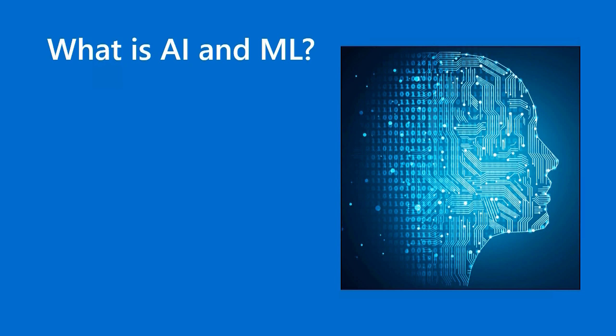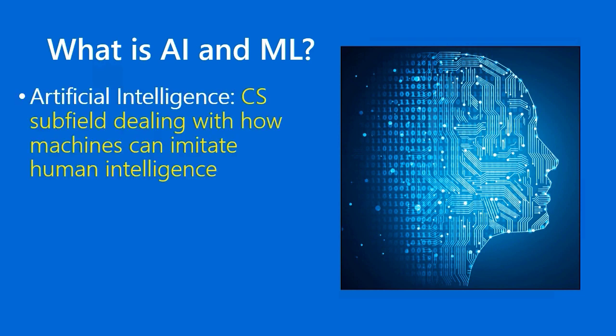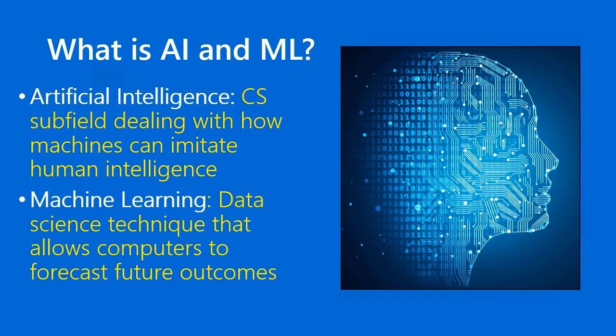I want to make sure you understand what is meant by artificial intelligence and its related term machine learning. These terms are often abbreviated AI and ML, respectively. Artificial intelligence is defined as a computer science subfield or specialty that deals with how machines can imitate human intelligence. Whereas AI is a more general term, ML is an application of artificial intelligence — a data science technique that allows computers to forecast future outcomes.